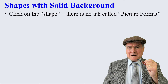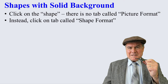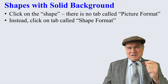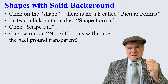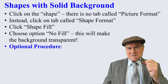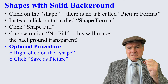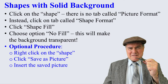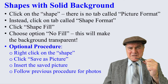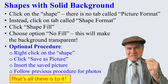Now let's deal with what PowerPoint calls shapes. You don't see a Picture Format — instead you see a Shape Format. You click on Shape Fill and choose No Fill; that usually does the trick. If not, here's an optional procedure: right-click on the shape, save as picture, then insert that picture back into PowerPoint and follow the previous procedure to get your transparent color. Again, that's all there is to it.